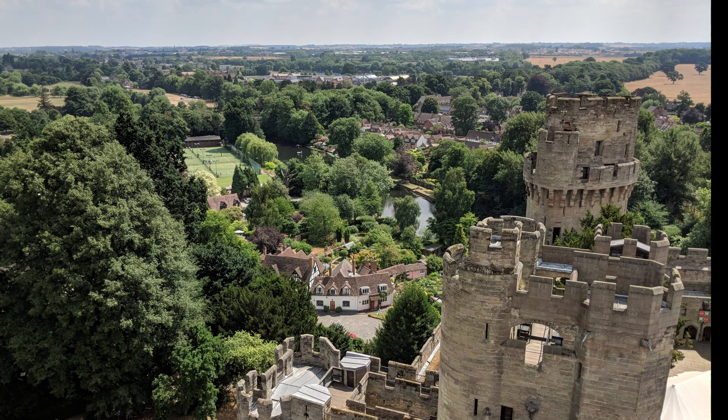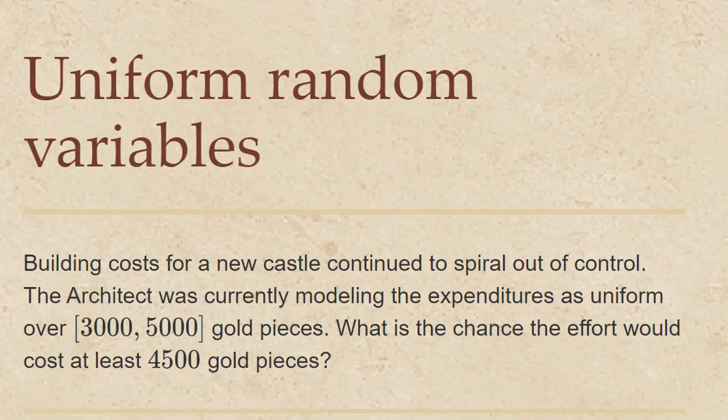Today I'd like to talk about uniform random variables, which are random variables where the probability is spread out over the region of interest as widely as possible. As always, let's begin with the story. Building costs for a new castle continued to spiral out of control. The architect was currently modeling the expenditures as uniform over the interval from 3,000 to 5,000 gold pieces. What is the chance the effort would cost at least 4,500 gold pieces?